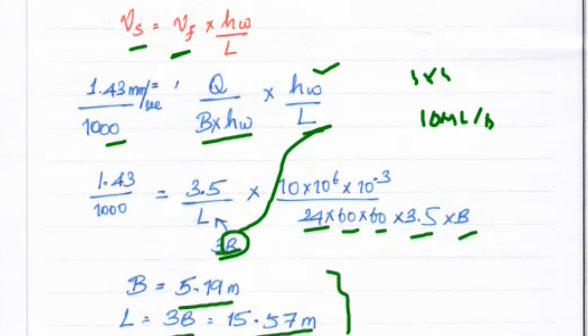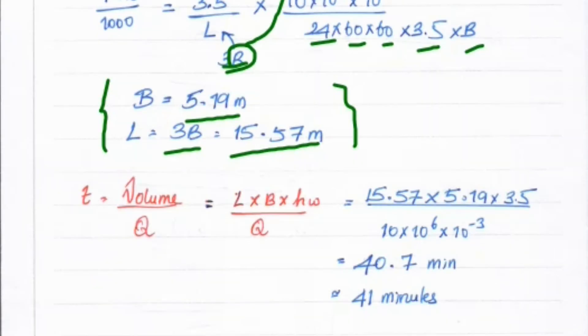We've calculated the dimension of the sedimentation tank. The second question asks us to find the detention time. T = Volume/Quantity.